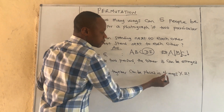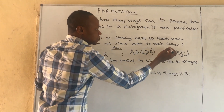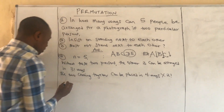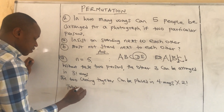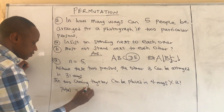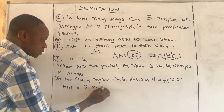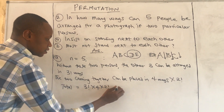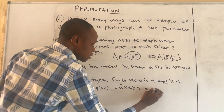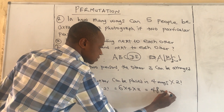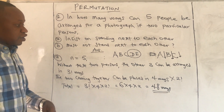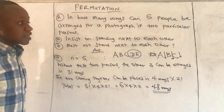We have four positions they can stand together, times two factorial for their internal arrangement. So the total number of ways of arranging five people if two insist on standing next to each other is three factorial times four times two factorial — that's 6 × 4 × 2 = 48 ways.